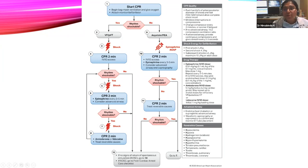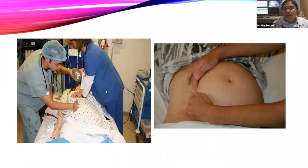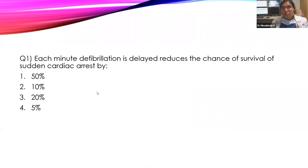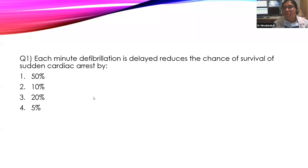MCQ 1: Each minute defibrillation is delayed reduces the chances of survival of sudden cardiac arrest by — options are 50%, 10%, 20%, or 5%. The answer is 10% — each minute of delay reduces survival chances by 10%.